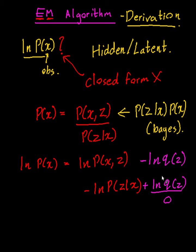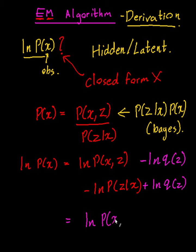So there's no net change, but it's important we do this step. Now what we can say is that this equals the log of the probability of x and z divided by q(z), plus the log of p(z|x) divided by q(z). I'm going to multiply both sides by q(z): q(z) times ln of the joint probability divided by q(z), minus q(z) times ln of p(z|x) divided by q(z).